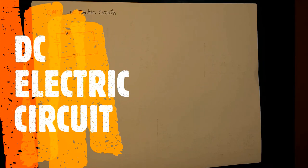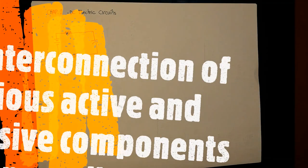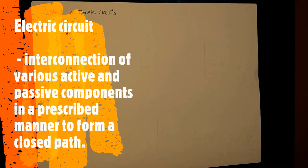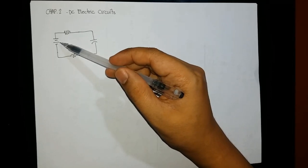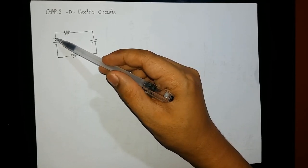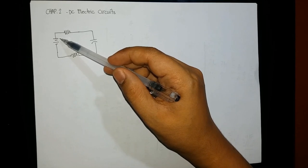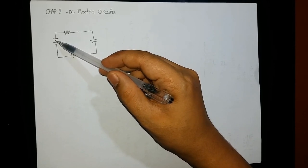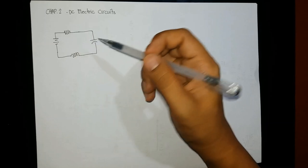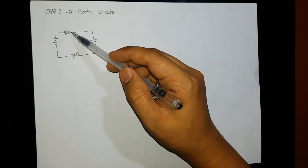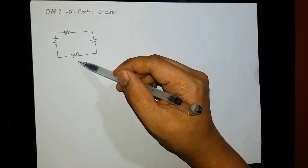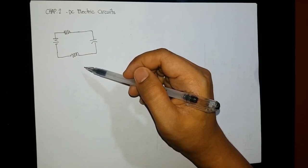First is electric circuit. An electric circuit is the interconnection of various active and passive components in a prescribed manner to form a closed path. For example, I have here a voltage source — suppose a battery. The longest terminal will be the positive and the shorter one will be the negative — connected through a resistor, a capacitor, and an inductor.